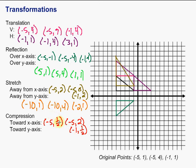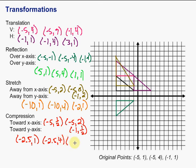To compress toward the y-axis, we multiply the x-coordinates by 1/2. That gives us negative 2.5, 1; then negative 2.5, 4; and finally negative 1/2, 1. The figure would be squished in toward the y-axis.